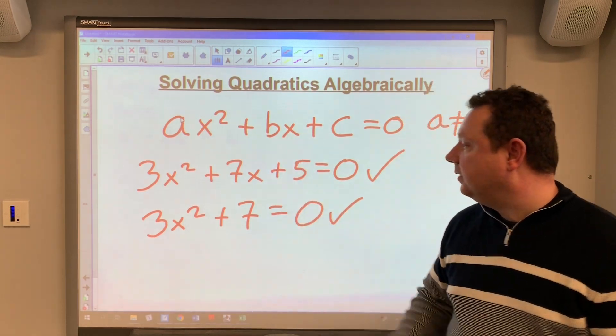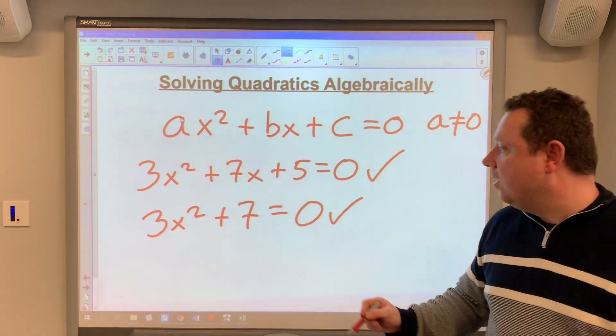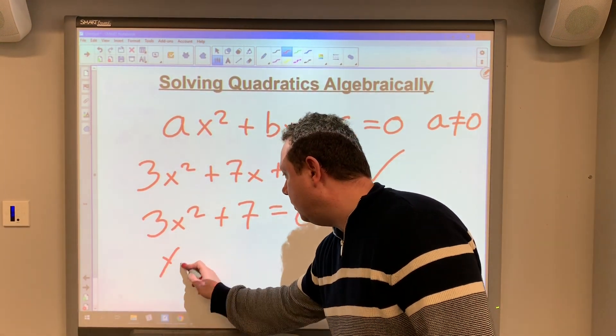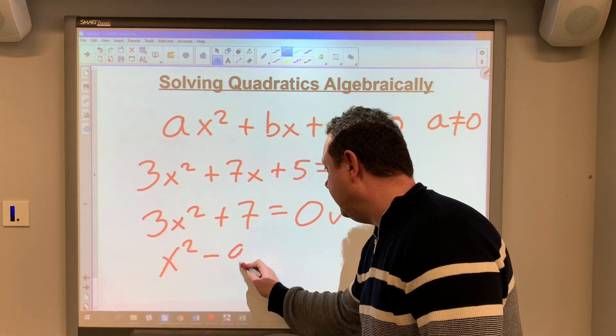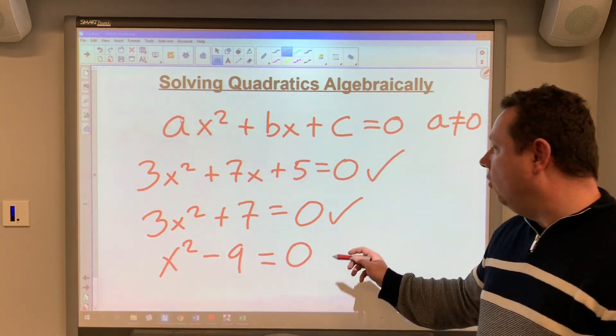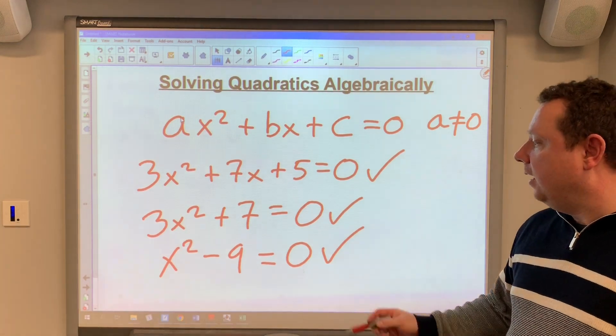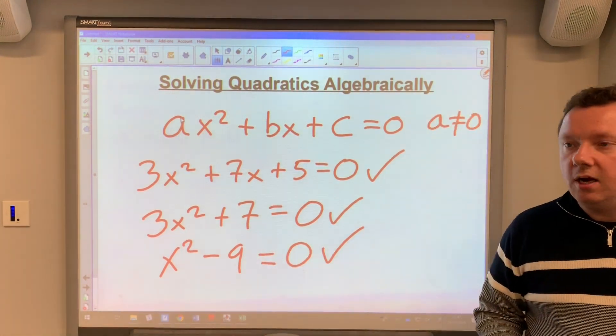You don't have to have any term for the x, or you could have x² - 9 = 0. That's also a quadratic. That's also called the difference of two squares. We'll be covering that today.